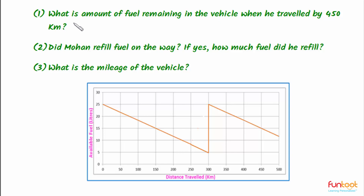For the first part, as the vehicle travels the amount of fuel in the vehicle decreases. For the second part, till 300 kilometers the fuel was constantly decreasing, and at 300 kilometers the fuel suddenly increases. Why does this happen? Does Mohan refill the vehicle?